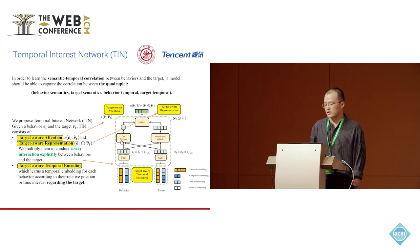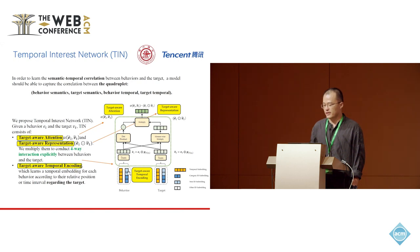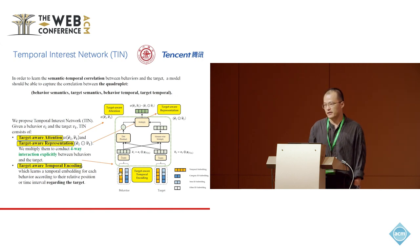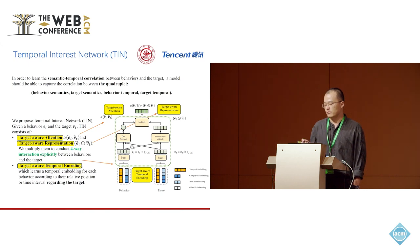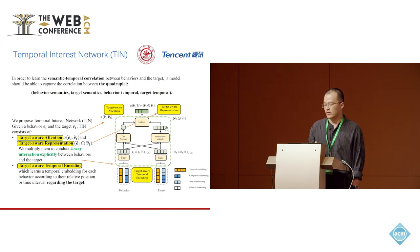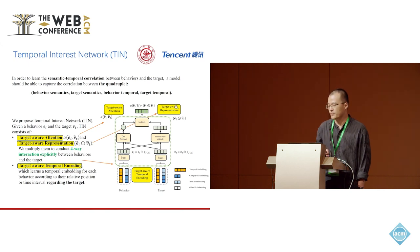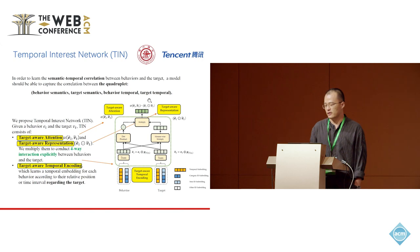We can explain the whole model architecture with this figure. At the bottom, for each behavior, besides the semantic embedding such as the category-ID embedding or item-ID embedding, we have a temporal embedding based on temporal information relative to the target. We have the same representation for the target, which corresponds to target-aware temporal encoding. We then multiply them to get a weight — the target-aware attention — and also get a vector by element-wise multiplication — the target-aware representation. Then we multiply these two together to get the final output.